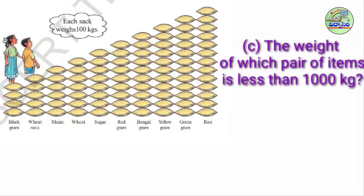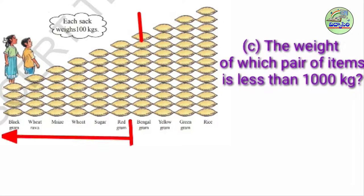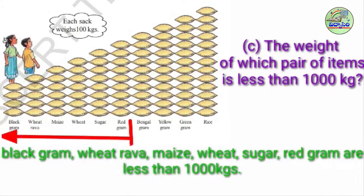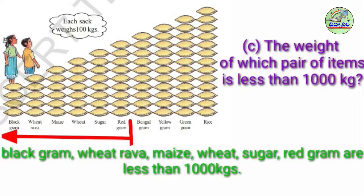I will give you another question, that is C: The weight of which items is less than 1,000 kgs? We already know 1,000 kgs is bengal gram. So less than 1,000 kgs means: red gram, sugar, wheat, maize, black gram. These items are less than 1,000 kgs.